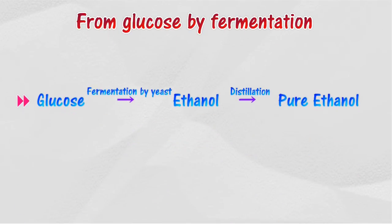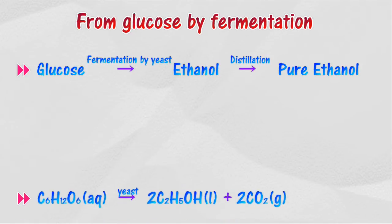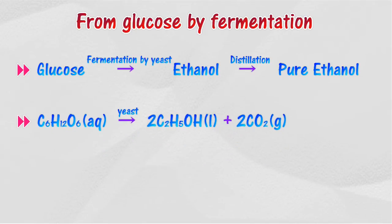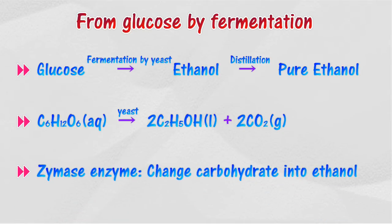Ethanol can also be produced via the fermentation process on carbohydrate sources such as glucose, starch, wheat, and barley, followed by distillation. Fermentation is a process of breaking down carbohydrates into ethanol and carbon dioxide via yeast action. The zymase enzyme in yeast acts on the carbohydrate and converts it into ethanol while releasing carbon dioxide.